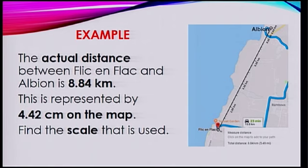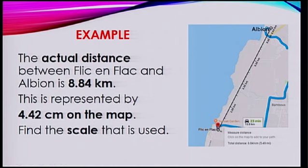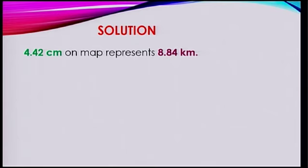Another example. The actual distance between Flic-en-Flac and Albion is 8.84 km. This is represented by a distance of 4.42 cm on the map. You're asked this time to find the scale that is used. Well, 4.42 cm on the map represents 8.84 km.